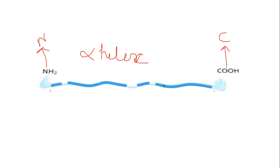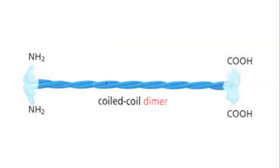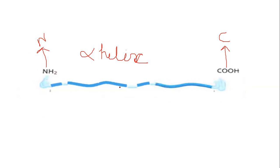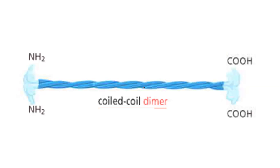How does the second subunit bind? The second subunit will not join here at the end. They will come in twist — they will wind around themselves. So it is called a coil-coil dimer. Why do we call it coil? Because the subunit itself is an alpha helix, which is a kind of coil. So this subunit is already in the coil form, and now the second subunit forms a coil around it — that is called coil-coil.